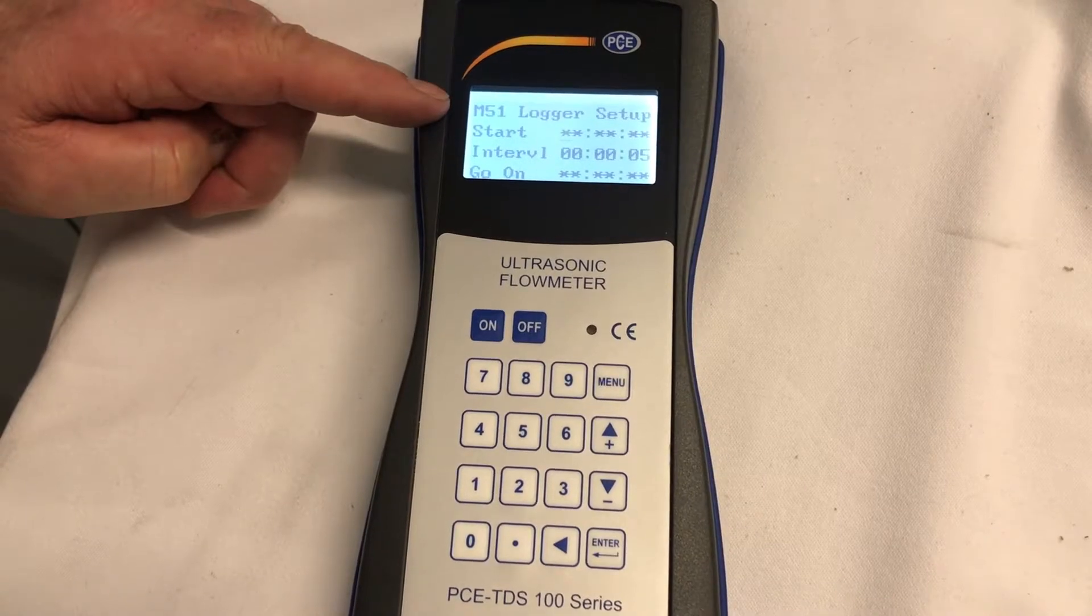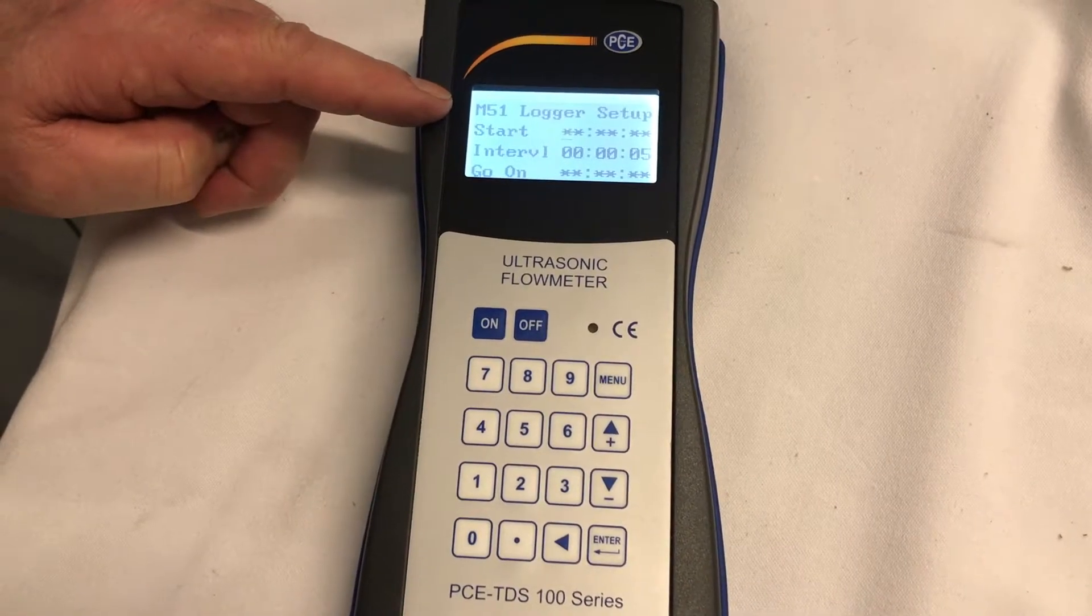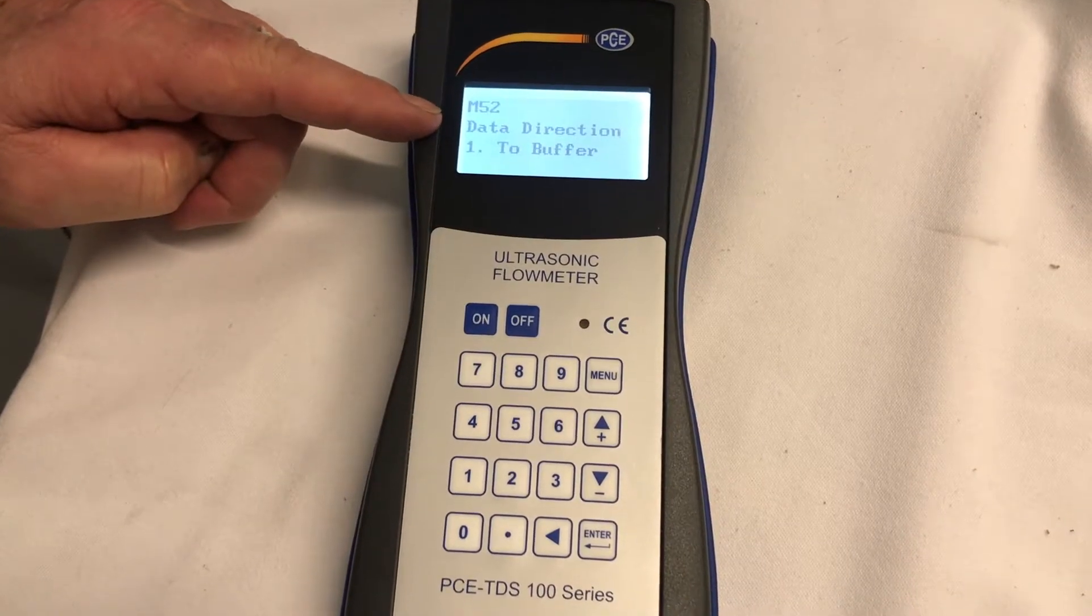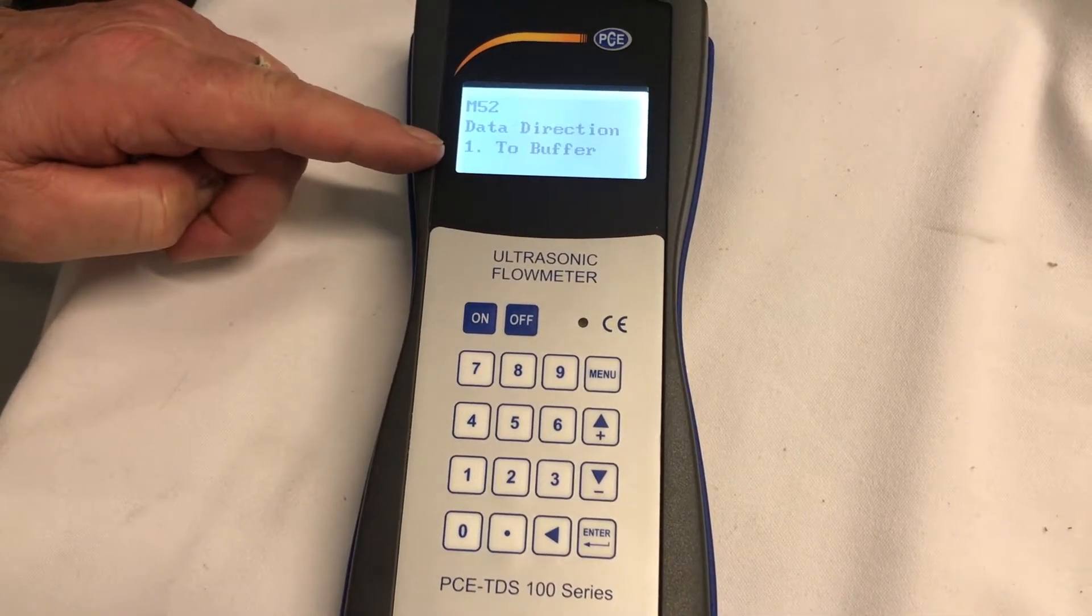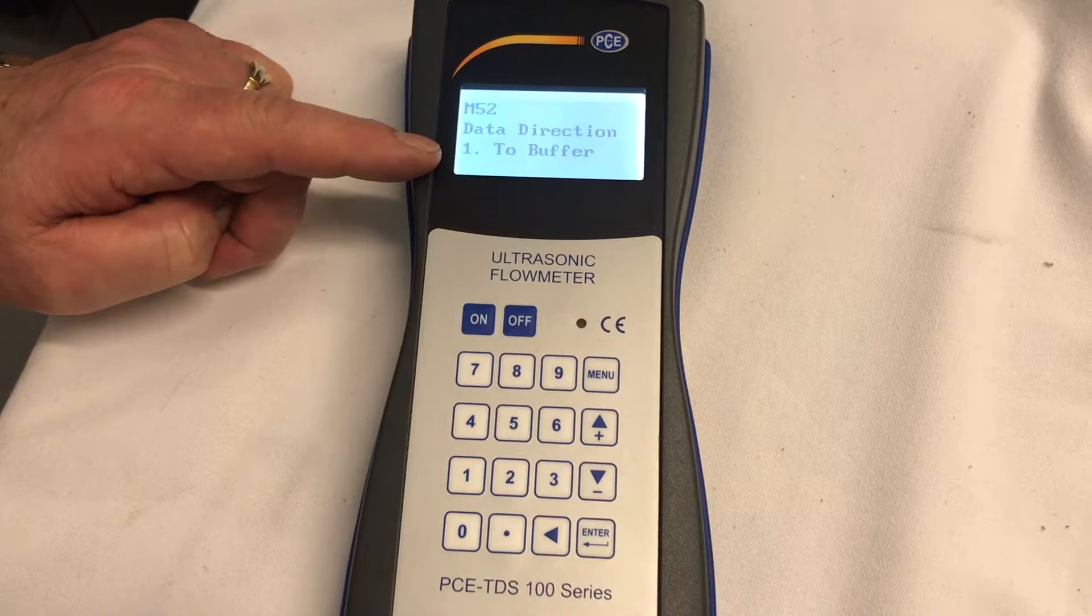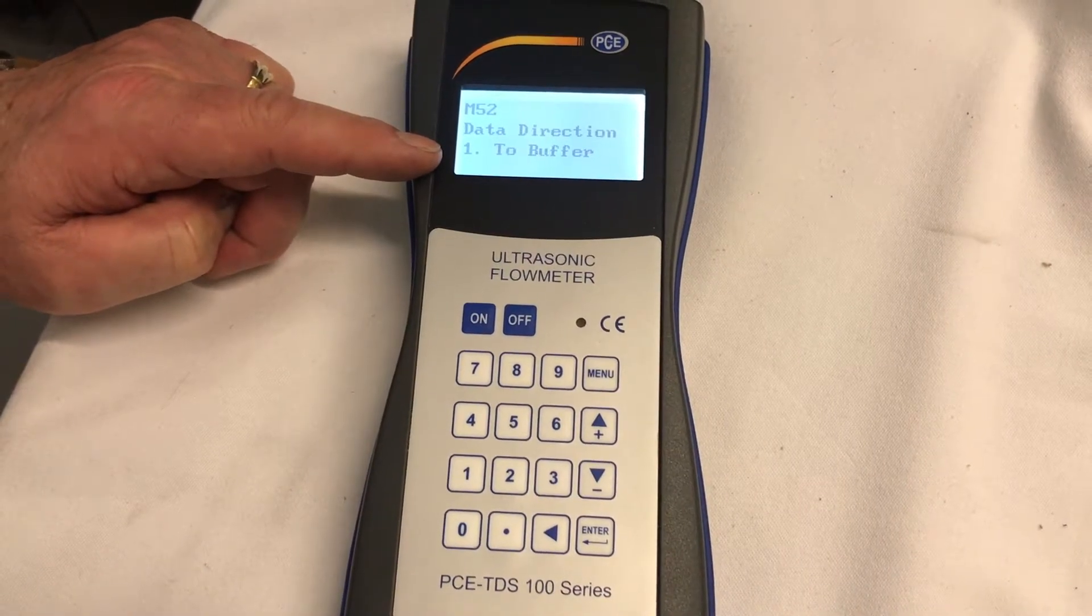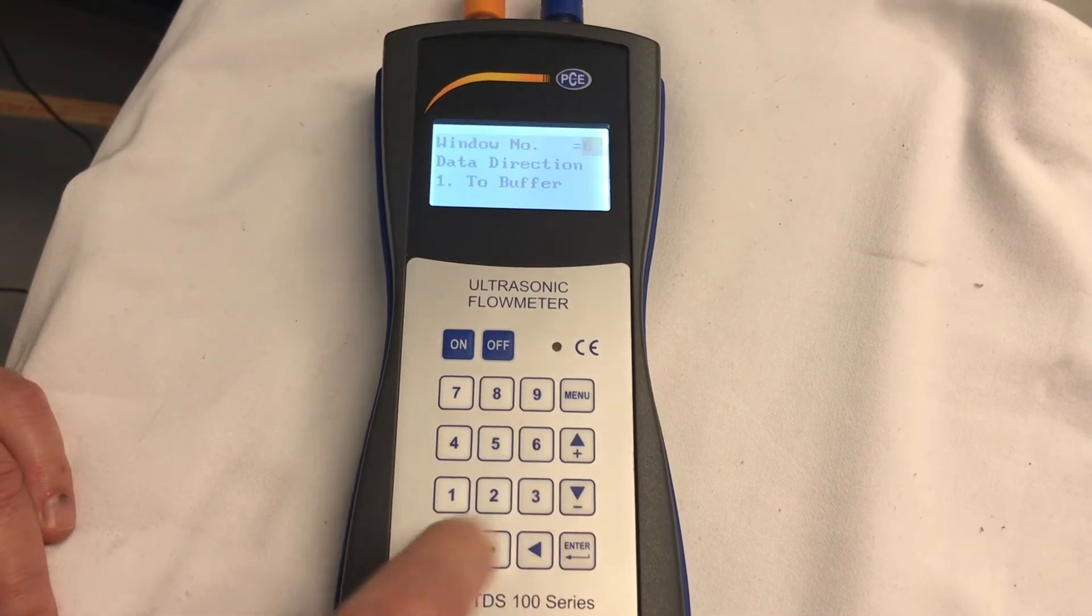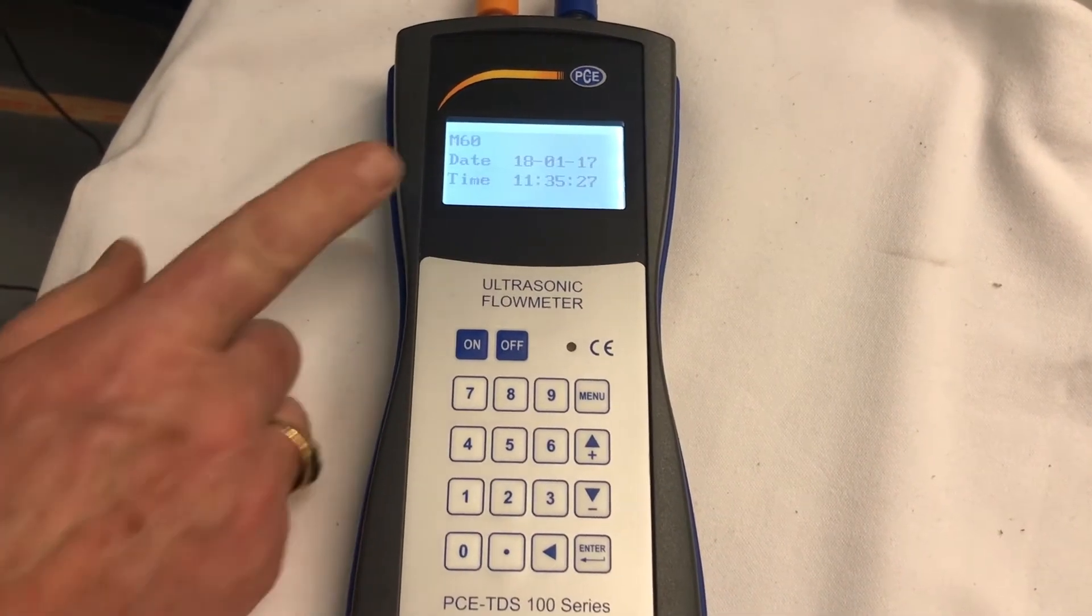M-51. M-52. We want to make sure that the data direction is going to the buffer. The buffer is the memory that's collecting your data. Next, we'll go to M-60, menu 60, which is the date and time.